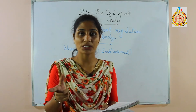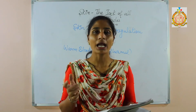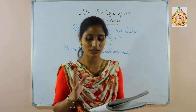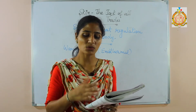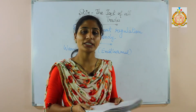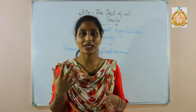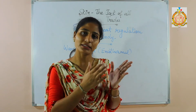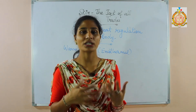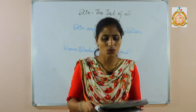Regarding temperature regulation, the principal heat regulation center is located in the hypothalamus. The hypothalamus is a portion of the forebrain and it acts like a thermostat. When the body tends to cool below normal temperature, it switches on and speeds up heat production. When the body tends to overheat, it accelerates the cooling process and switches off heat production processes.